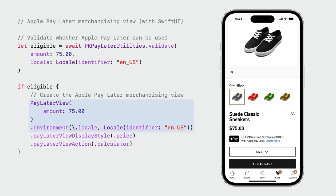To use it, you instantiate a PayLaterView and provide it with the same information as before. To customize the display style and action, use the appropriate view modifiers to do so. And it's as simple as that.